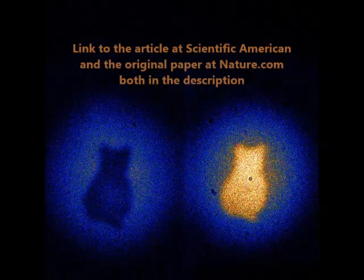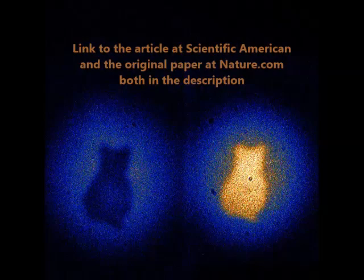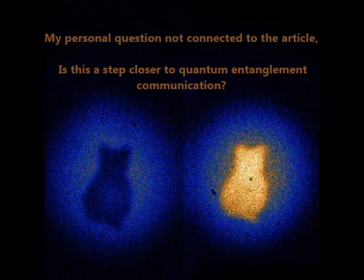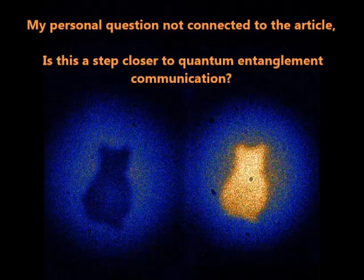The researchers wanted to know what information they could get on a photon without detecting it. So they created twin pairs of photons that are indistinguishable, to see if they could get one twin to interact with an object and this interaction be seen in the other. Here's Lizzie Gibney talking to author Gabriela Barreto-Lemos from the Institute of Quantum Optics in Vienna, Austria.